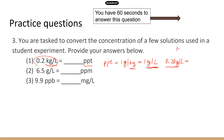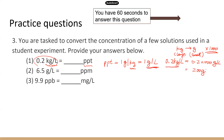You're converting from kilogram to gram — from a large unit to a small unit. When you convert from large to small, you multiply by the conversion factor, which is 1,000. So 0.2 times 1,000 gives you gram per liter, and that's 200 gram per liter. The correct answer is 200 PPT.